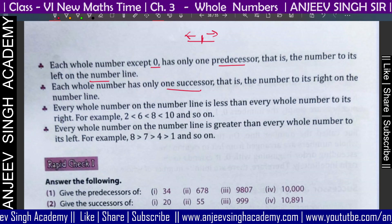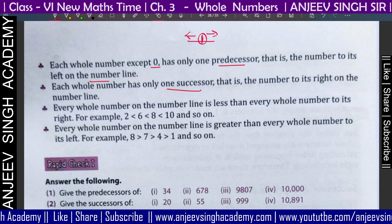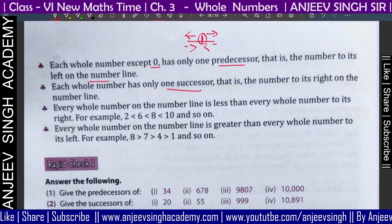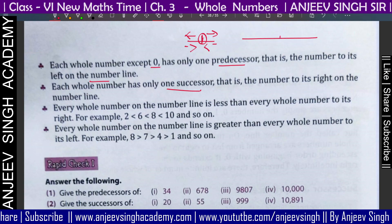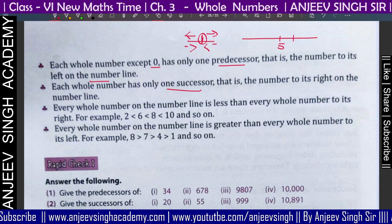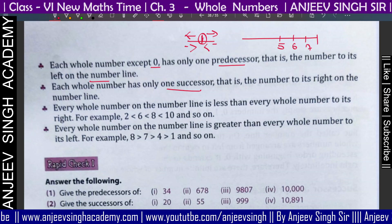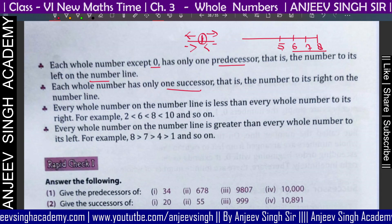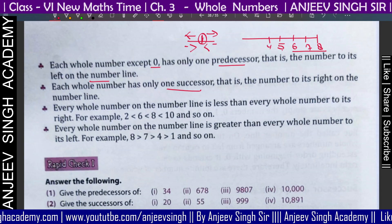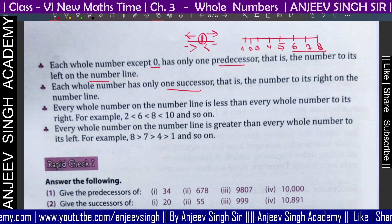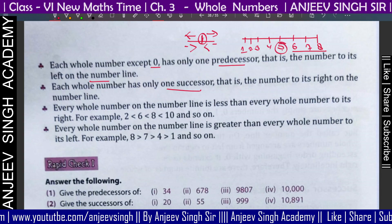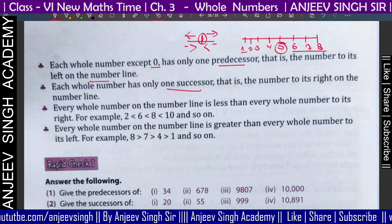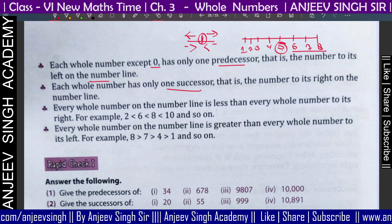Every whole number on the number line is less than every whole number to its right. For example, take the number 5 — to its right are 6, 7, 8, so 5 is smaller than all of them. To the left of 5 are 4, 3, 2, 1, so 5 is greater than all of those. So on the number line, every number is greater than every whole number to its left.